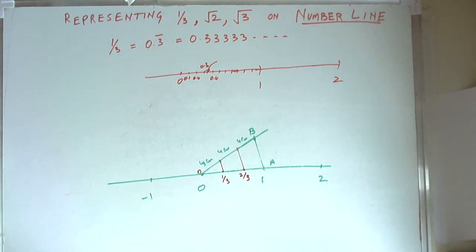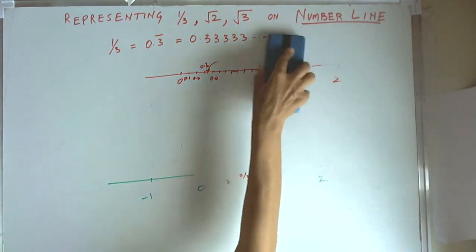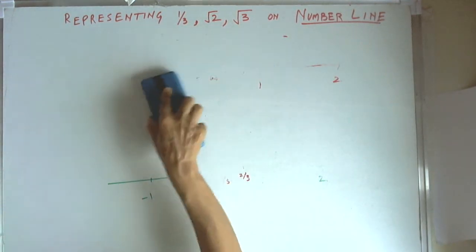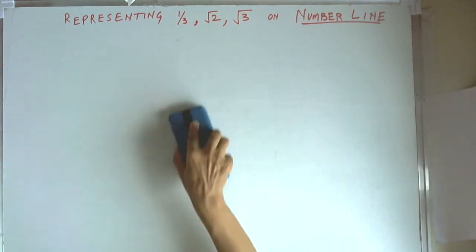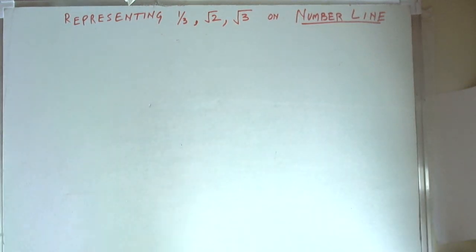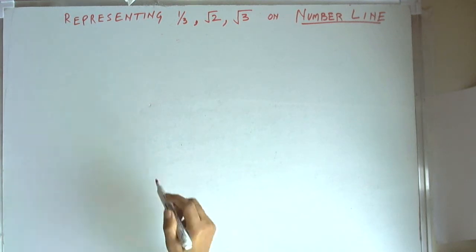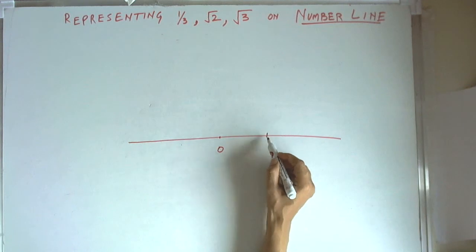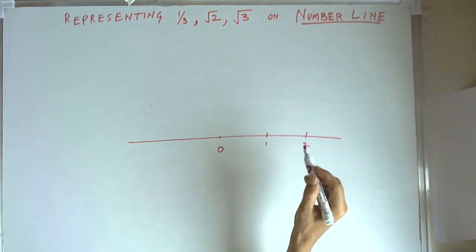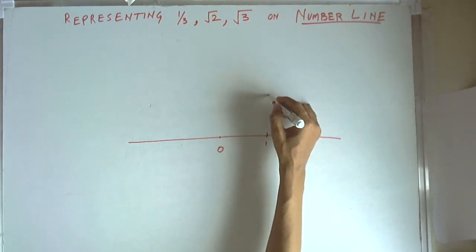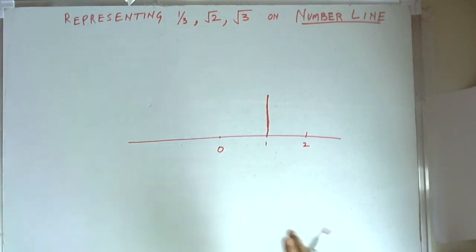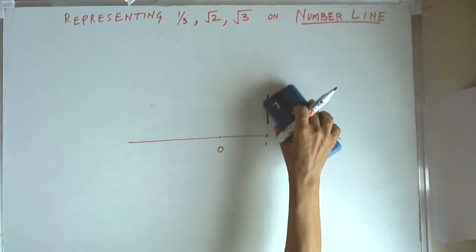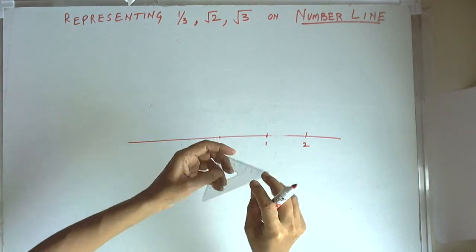Now we will see how to represent square root of 2. Square root of 2 is an irrational number, and an irrational number cannot be represented in exact form in decimal or fraction. Therefore, we are not in a position to represent the accurate value on the number line directly. But by this method, we are able to — so this is 1 and this is 2 on the number line. We draw a perpendicular to the number line, using a set square for drawing the perpendicular.